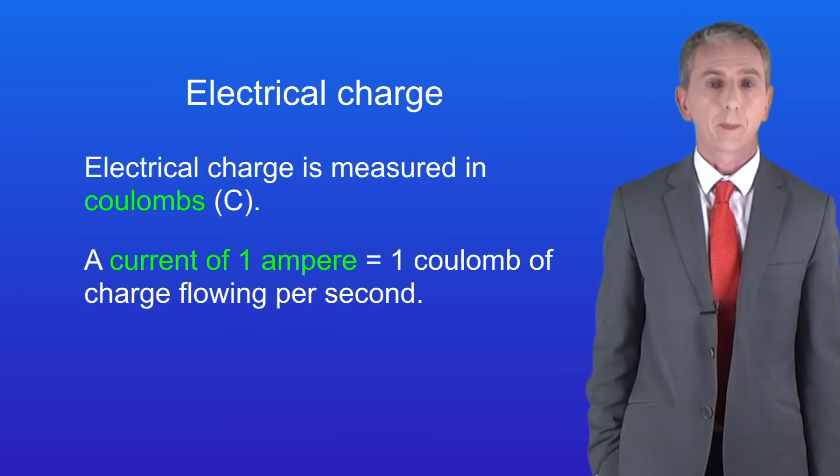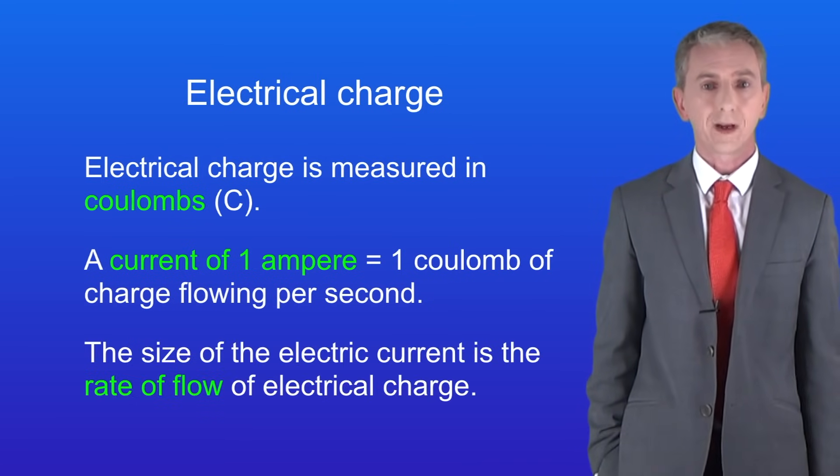A current of one ampere means that we've got one coulomb of charge flowing per second. So in other words, the size of the electric current is the rate of flow of electrical charge.